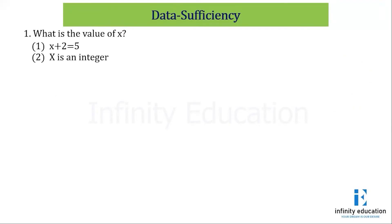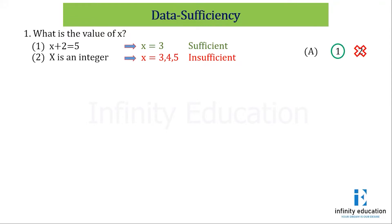The question is asking: what is the value of x? Statement 1 says x + 2 = 5. The value for x is 3, so we can say this is sufficient because except 3 there are no other values of x for which the equation will be satisfied. Statement 2 says x is an integer, so the value for x can be 3, 4, 5, or anything — this is insufficient. So A is the answer because statement 1 alone is sufficient but statement 2 alone is not sufficient.